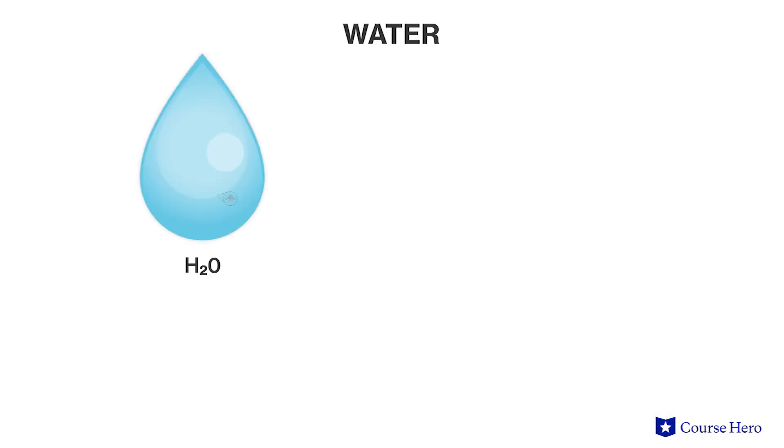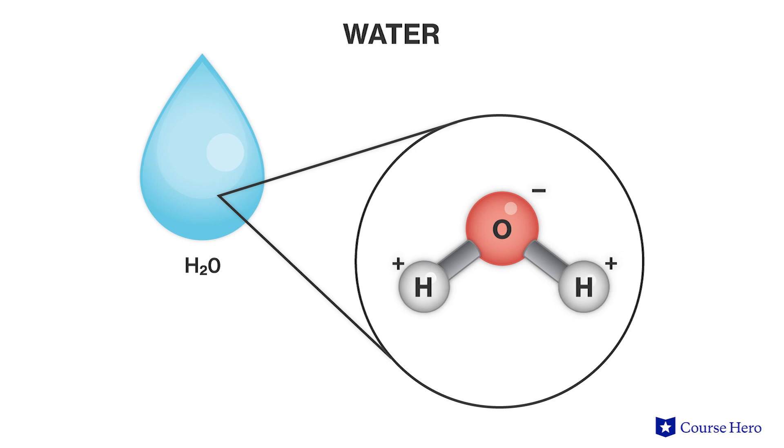Earth has specific molecules that make it habitable for life. For example, Earth has large quantities of water, a molecule that consists of hydrogen and oxygen atoms, and a molecule which most scientists agree is vital for life to develop.